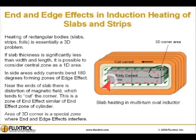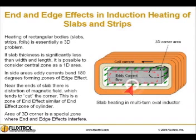Inside areas, eddy currents bend 180 degrees, forming zones of edge effect. Near the ends of a slab, there is distortion of the magnetic field which tends to cut the corner. This is a zone of end effect, similar to the end effect zone of a cylinder.